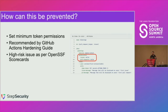Once they exfiltrated the token, because it had contents write permission, they were able to create a new branch, push changes, and merge the pull request. The best practice here is to set minimum token permissions for this GitHub token. As you can see in the screenshot, you can set permissions using a permissions key. This is recommended by GitHub, and it is also something that the OpenSSF Scorecards project finds and classifies as a high-risk issue.